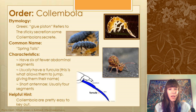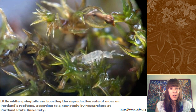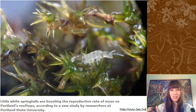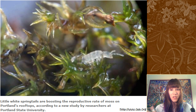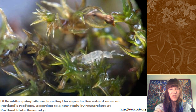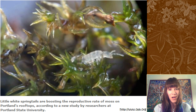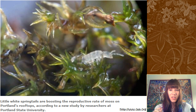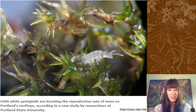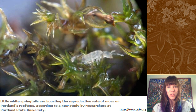A really cool study came out last year showing that collembolans help pollinate moss. It's not true pollination because moss doesn't have pollen — it has sperm that is usually transmitted by water. But researchers found that springtails and other small arthropods are collecting the sperm and moving it around, which is a bit more efficient than relying on water. So even basal plants are relying on insect-like things to help move their genes around.